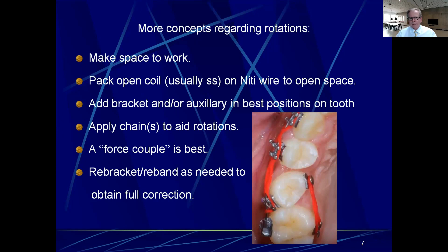Make space to work — I love this saying oral surgeons have: 'small incision, small brain.' If you try to take out a wisdom tooth through a little 4mm incision you're making it hard on yourself; you need to open it up to 50mm so you can see what you're doing. To make that space, pack stainless steel open coil on a niti archwire and blow that space wide open so you can get auxiliaries on there to get the job done.